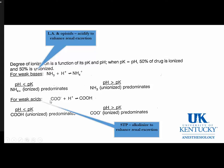For weak acids, the reactive species is a carboxyl group. The carboxyl group is the charged species, and the carboxylic acid is the non-ionized, unionized, active species. Unlike a weak base, in an acidic environment with a weak acid, the unionized species predominates, whereas in an alkalotic environment, the ionized species predominates. This is important in emergency medicine: treating a barbiturate overdose by alkalinizing the patient with sodium bicarbonate increases the ionized species of the drug, encouraging renal excretion.